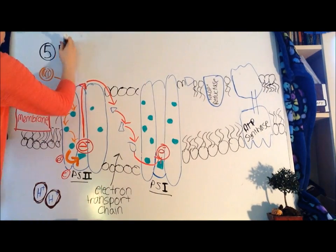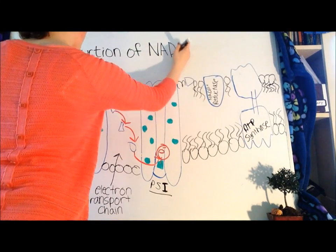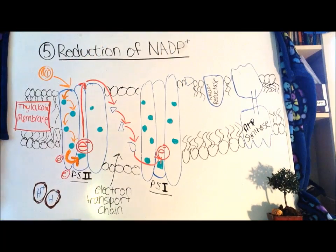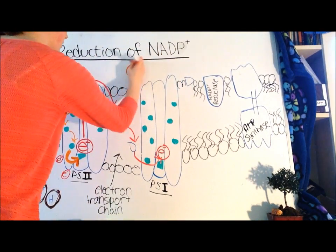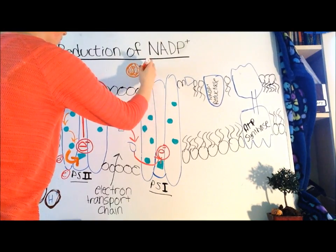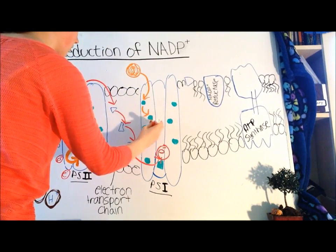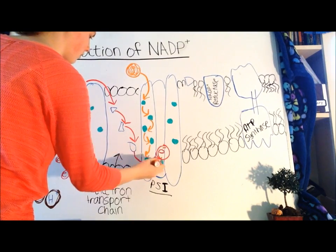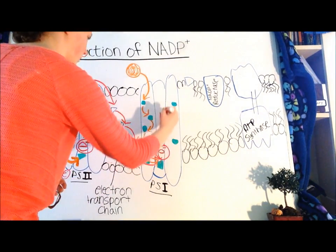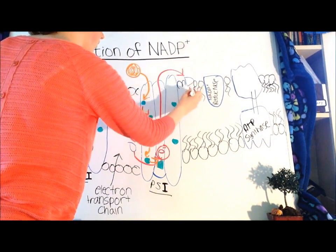Next is step five, reduction of NADP+. Now once the electron reaches the reaction center of Photosystem I, it is excited by another photon of light and boosted into the second electron transport chain.